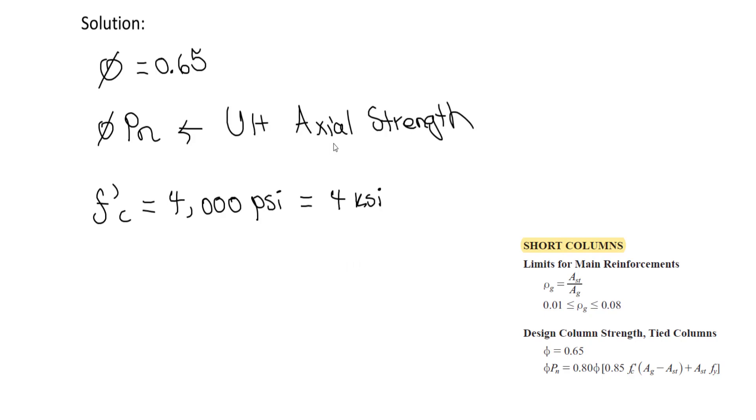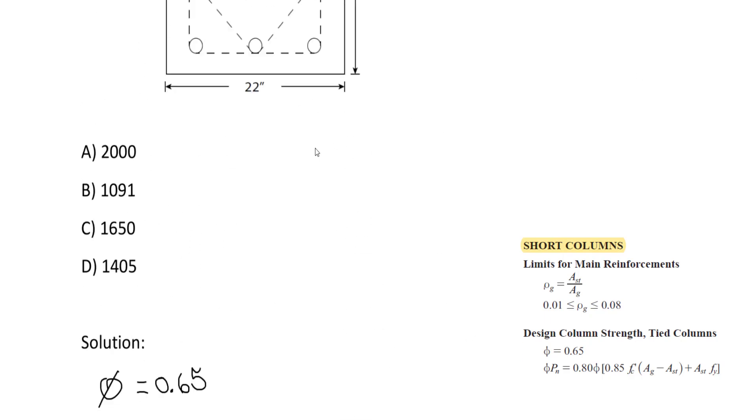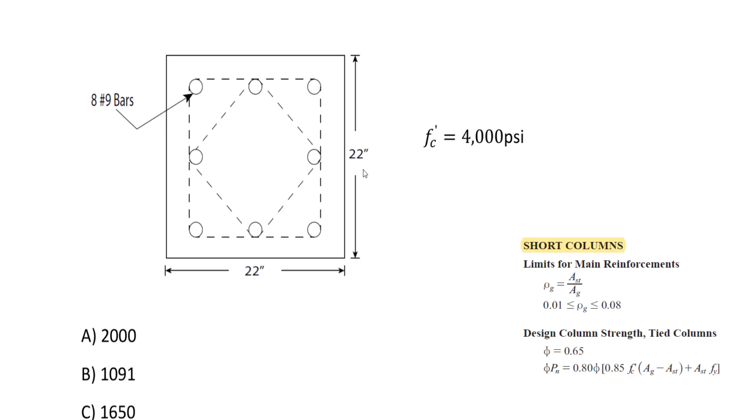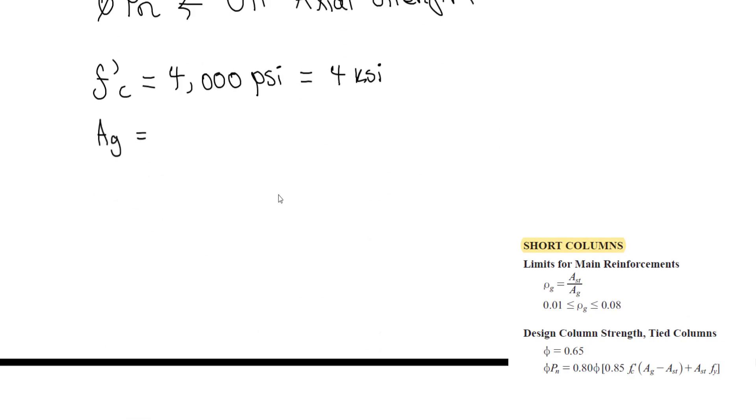Now, our phi is 0.65, and we can determine the gross area for the concrete. We simply take 22 by 22, which gives us 484 inches squared.